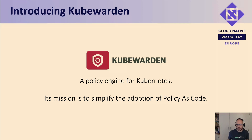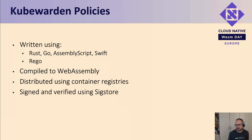What makes Kubewarden different from other projects is the way of writing and distributing policies. In the Kubewarden case, you can take a regular programming language or use Rego, the query language introduced by Open Policy Agent, compile this policy into a WebAssembly module, distribute it using a container registry, and then execute it with a webhook server capable of running WebAssembly — a plugin system based on WebAssembly.